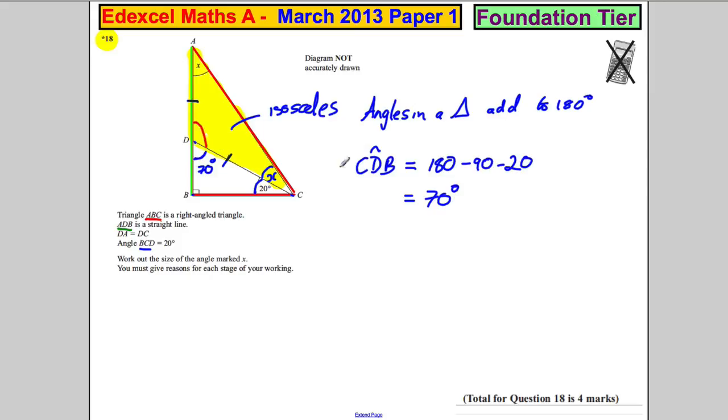Well, it means we can work out this angle here, angle CDA. That is on a straight line with this 70, so that must be 110 because it's on a straight line. So that's 110.